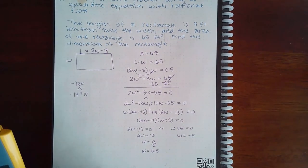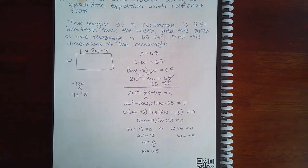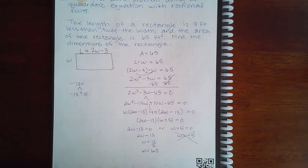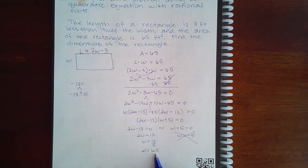Now we have to decide which of these two responses make sense in the problem. Well, a width cannot be a negative measurement, so this one does not make sense to our problem. However, width can equal 6.5, so we've got one dimension. We know that the width is 6.5 feet.